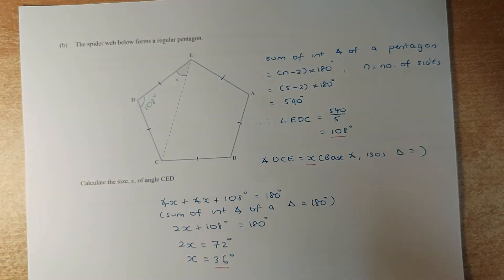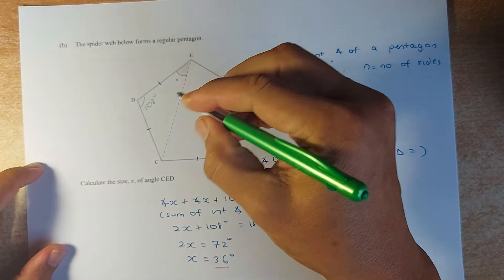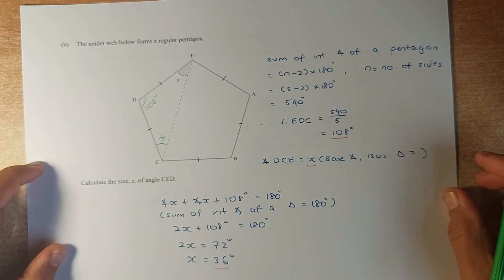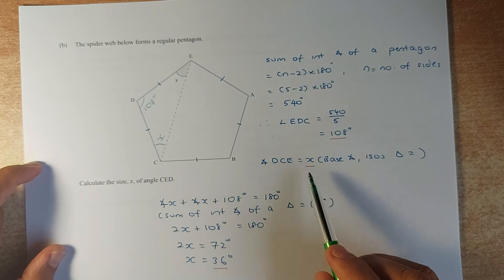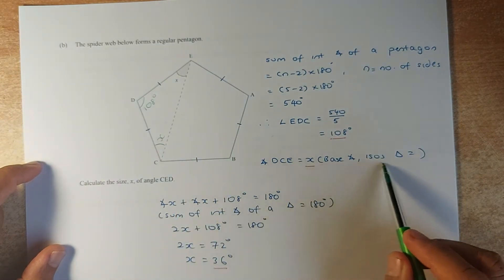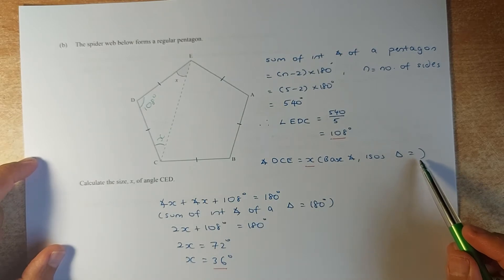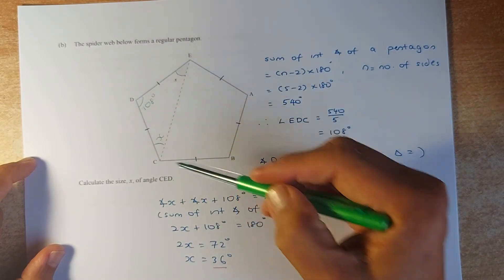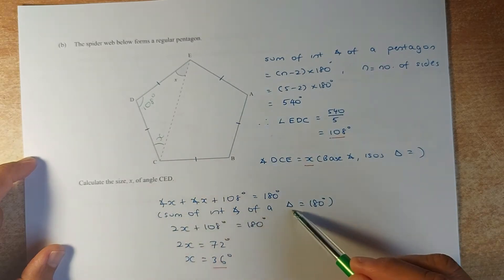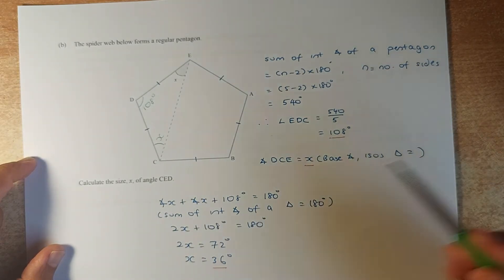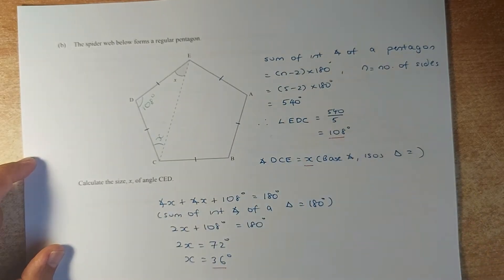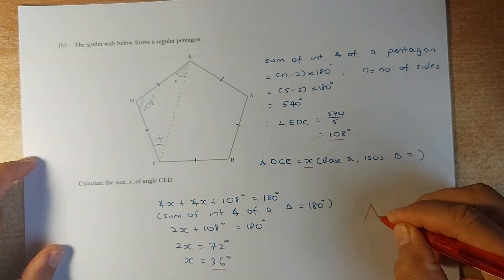To solve for x, note that two sides of the triangle are equal in length, so the base angles of the isosceles triangle are equal — both are x. So angle DCE is also x. Using the angle sum of a triangle: 108 plus x plus x equals 180. So 2x plus 108 equals 180, giving 2x equals 72, and x equals 36 degrees. That gives you an achieve in this paper.